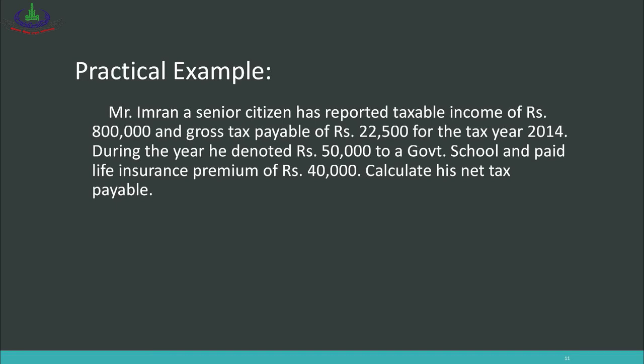Mr. Imran, a senior citizen, has reported taxable income of rupees 8,00,000 and gross tax payable of rupees 22,500 for tax year 2014. During the year, he donated rupees 50,000 to a government school and paid life insurance premium of rupees 40,000. Calculate his net tax payable. In this example, unlike previous units, we are not required to calculate income under different heads — the taxable income and gross tax payable are already given. We need to calculate the effect of his senior citizen status, donation, and life insurance premium.